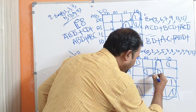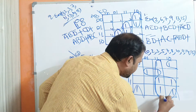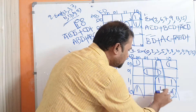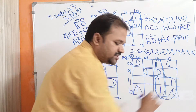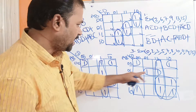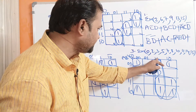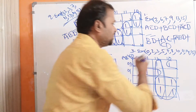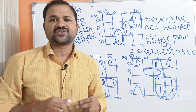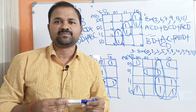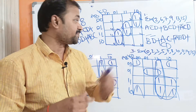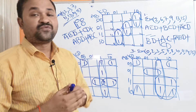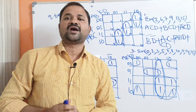We can choose to group as four cells giving C D, and in this way we can solve any problem using the Karnaugh map. In the next video we will see some more examples on the four-variable Karnaugh map.